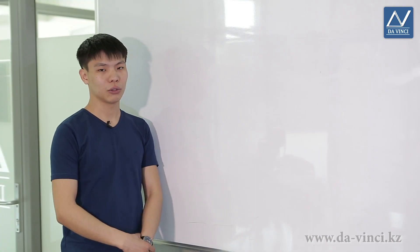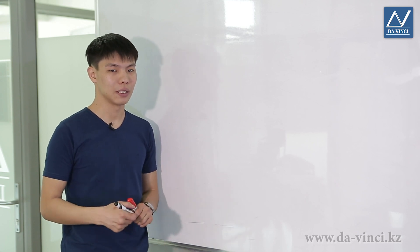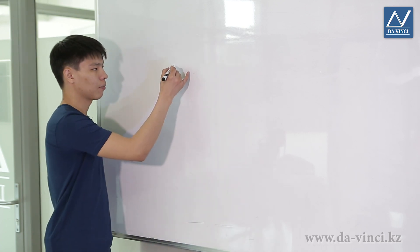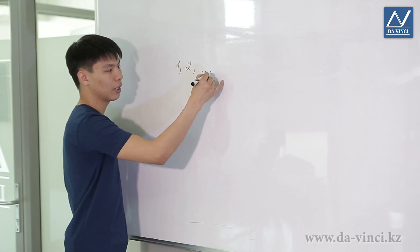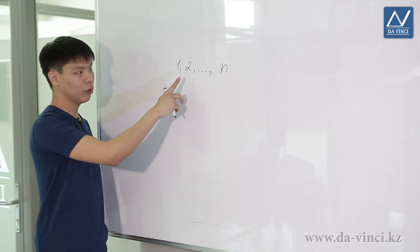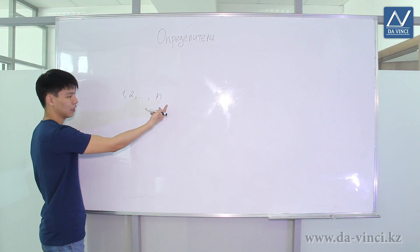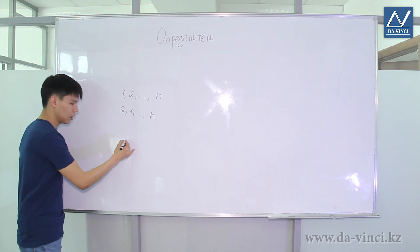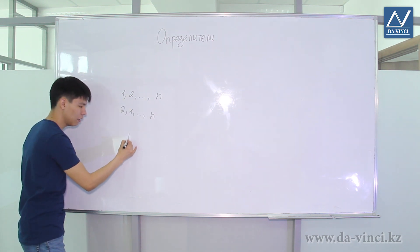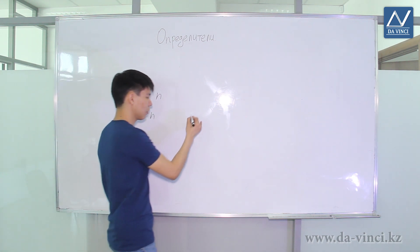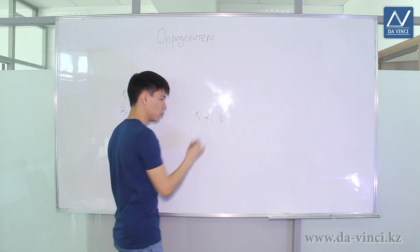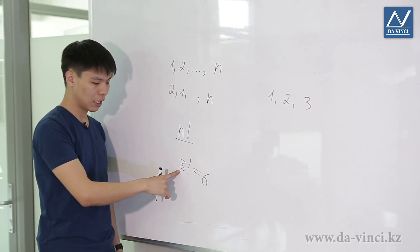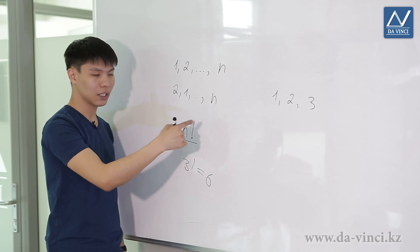In fact, what we have just calculated are ready-made formulas. However, it is not a definition of the determinant. The concept of a determinant is inextricably linked with the concept of permutations. For example, we have n natural numbers from 1 to n. We will get a permutation if we rearrange any numbers. The total number of such permutations, from combinatorics, is n factorial. For example, with numbers 1, 2, 3, there are 3 factorial equals 6 permutations.